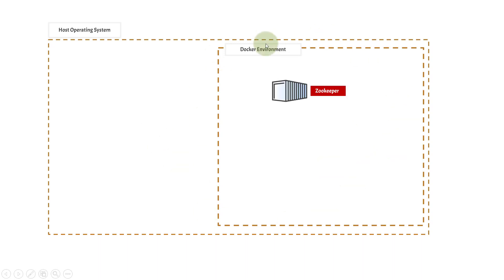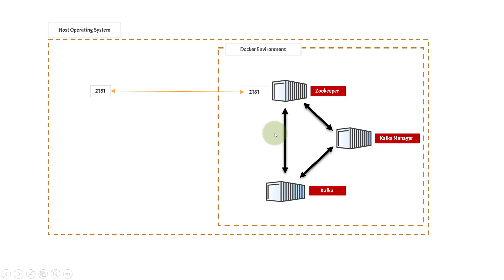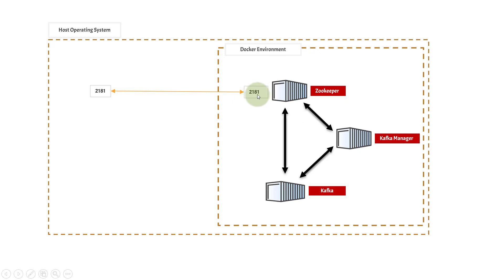Inside the Docker environment, we will be creating a Zookeeper container, a Kafka container, and a Kafka Manager container. All three will be able to talk to each other — there will be a connection between them. The Zookeeper container will be exposed on port 2181 to the host operating system, and inside the Docker environment it is linked with port 2181. If you're familiar with Docker port forwarding, you'll understand that the host port 2181 maps to the Zookeeper container port 2181.